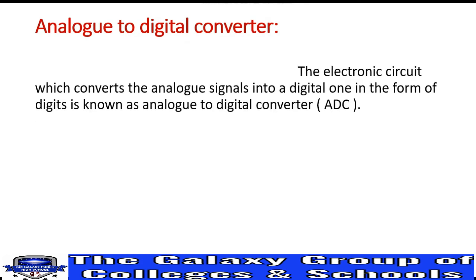Analog to Digital Converter: an electronic circuit which converts an analog signal into a digital one is called an Analog to Digital Converter. The digital signal is in the form of digits — 0 and 1. The circuit that converts analog signals into digital signals is called an Analog to Digital Converter, also abbreviated as ADC.